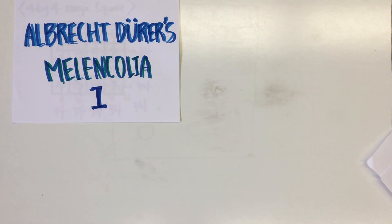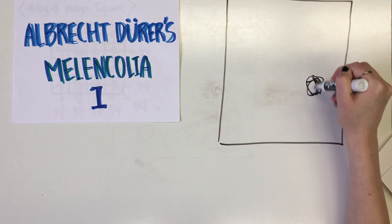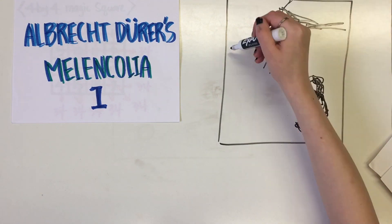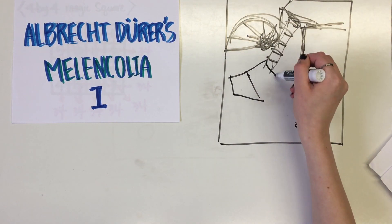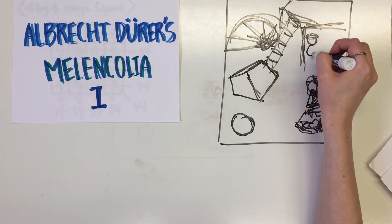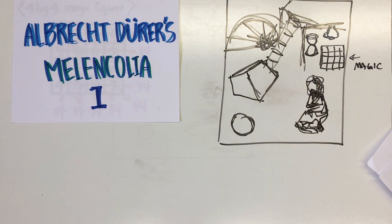Around her are strewn objects relating to craft, alchemy, and geometry, such as an hourglass, weighing scales, and a hand plane. Dürer's magic square is located at the top right of the engraving.